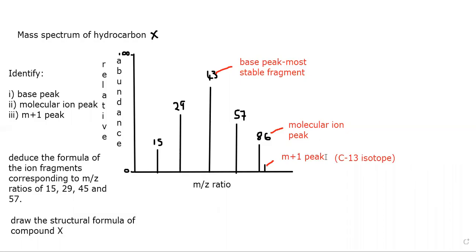After you have identified your base peak, molecular ion peak, and M+1 peak if present, the next thing you might be asked to do is identify or draw the fragments. So for peaks at 15, 29, 43, 57, and 86, you have to be able to do that.